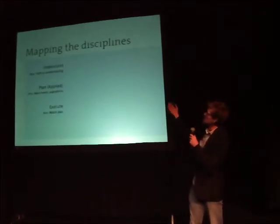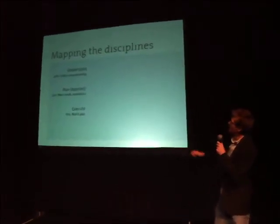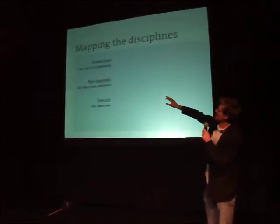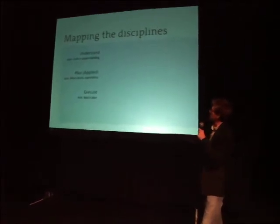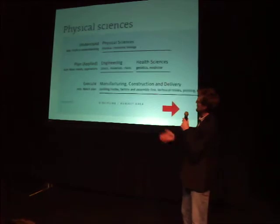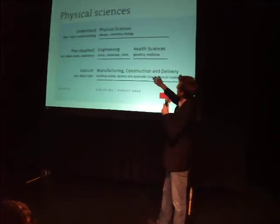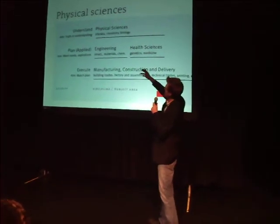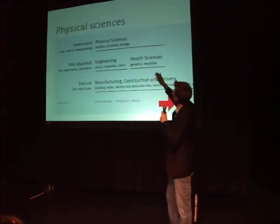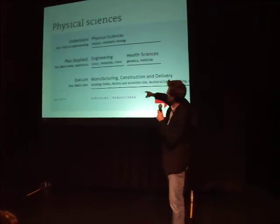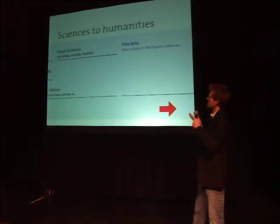What I'm going to try to do is map out the disciplines using an Aristotelian model: disciplines that deal with understanding, disciplines that apply that understanding, and disciplines that execute that understanding. As an example, the physical sciences deal with understanding — the aim is truth. Then engineering applies that understanding. Chemistry and biology map to health sciences. The execution of all that is manufacturing, construction, and delivery. This is a way to conceptualize how the disciplines relate.